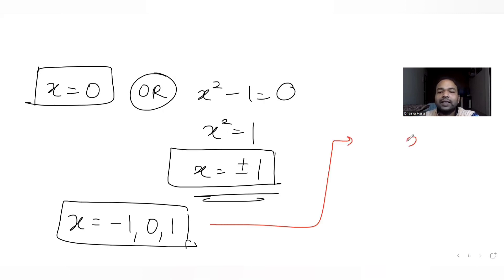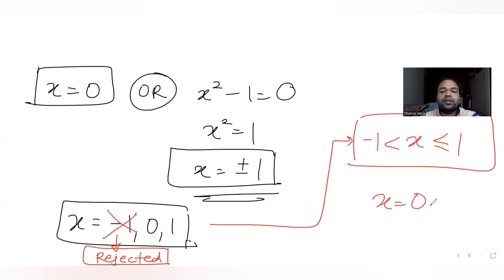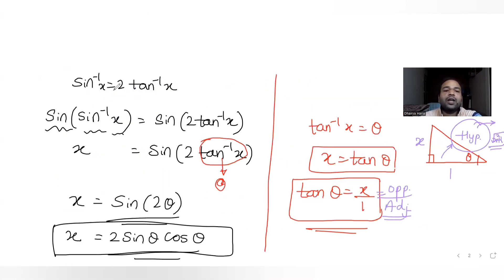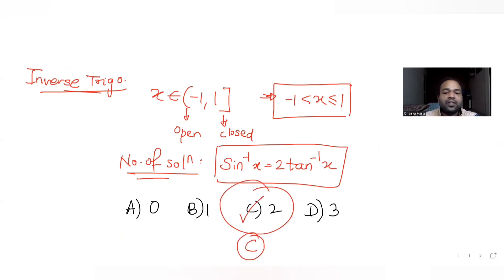However, we were told x is greater than -1 (open interval), so x = -1 must be rejected. That leaves two valid values: x = 0 and x = 1, which both satisfy sin⁻¹x = 2tan⁻¹x within the given range. The answer is option C, which is 2.